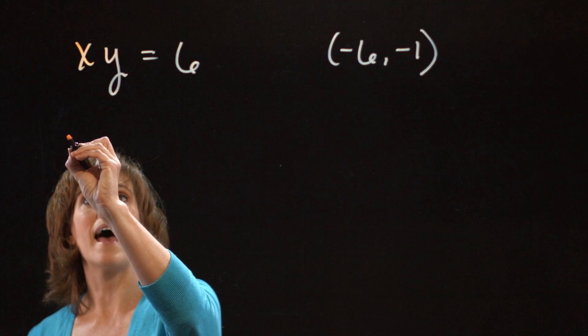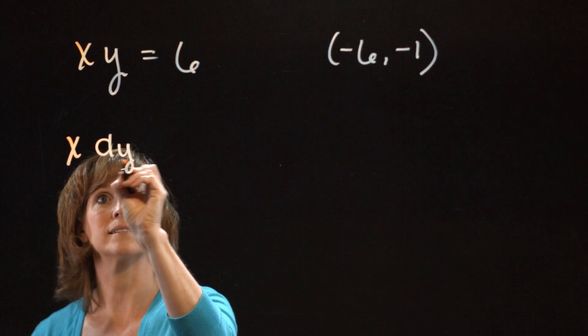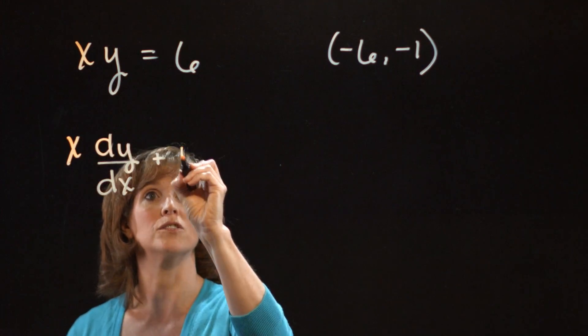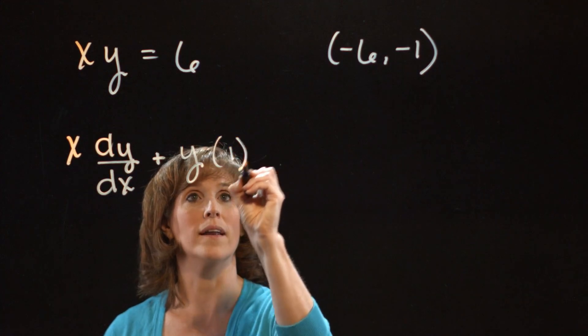So I'll begin with x times the derivative of y with respect to x. So that's dy dx. Plus the second factor, which is y, times the derivative of x with respect to x. That's just 1.